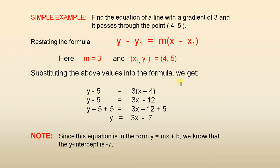Substituting the above values into the formula we get y minus five equals three outside of x minus four. That gives us y minus five equals three x minus twelve — we just remove the grouping symbols. Adding five to both sides and simplifying, we get y equals three x minus seven.